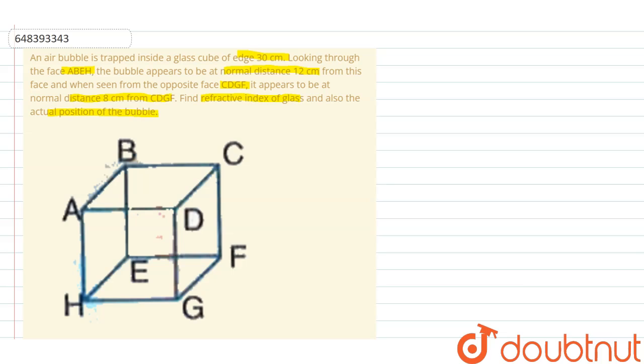So now let's see the answer. Let the actual distance of the bubble from the face ABEH be X, and its actual distance from the face CDGF be 30 minus X.